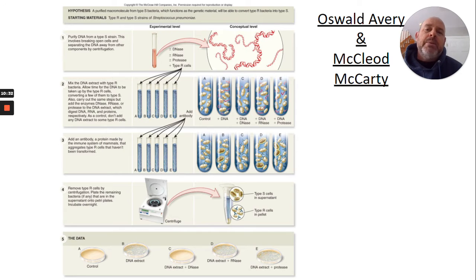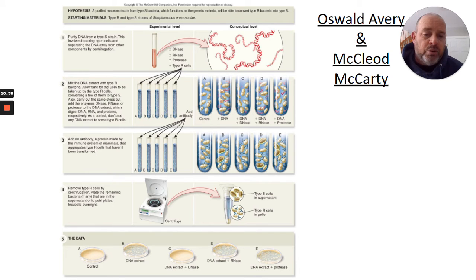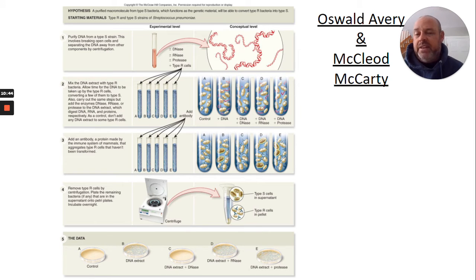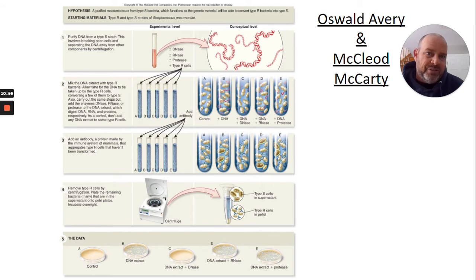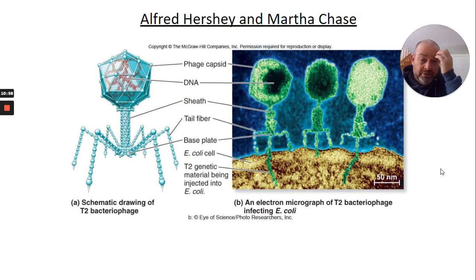This allowed Oswald Avery to initially conclude that DNA was the material being transformed — the one that was moved into the mouse that ultimately killed it. But a lot of scientists said the experiment had errors and they weren't sure they agreed. Some said yes, it's DNA, while others were still doing experiments and still thinking RNA or protein. Science didn't fully accept this as fact just yet.